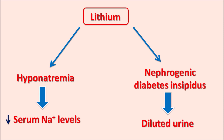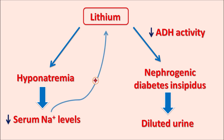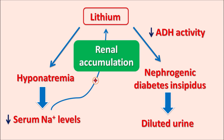Lithium produces excretion of diluted urine with increased urinary volume through its inhibitory effect on antidiuretic hormone activity. When lithium levels are excessively increased, it produces both hyponatremia and nephrogenic diabetes insipidus. Importantly, hyponatremia further worsens diabetes insipidus — decreased serum sodium increases lithium accumulation within the renal tubules, which further enhances nephrogenic diabetes insipidus. Hyponatremic conditions increase lithium toxicity, and when lithium is combined with other diuretics such as loop diuretics or thiazide diuretics, further hyponatremia results in enhanced lithium toxicity.